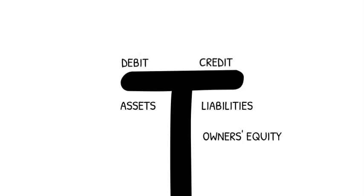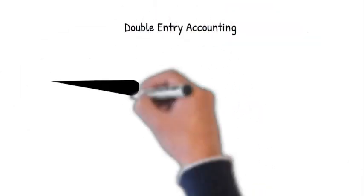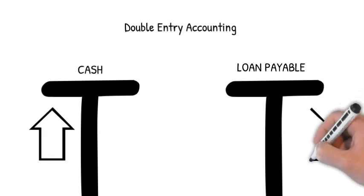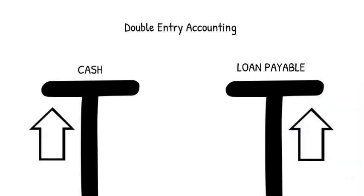Now that we have the basic accounting equation, we need to see which accounts should have a debit or credit balance. In most cases, assets have a debit balance and liabilities and shareholders equity both have credit balances. Because every business transaction affects at least two accounts, our accounting system is known as a double entry system. For example, when a company borrows $100 from a bank, the transaction will increase the company's cash account and increase the company's loan payable account. When the company repays the bank loan, the cash account and the loan payable account are both then reduced.